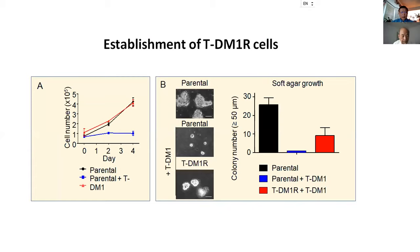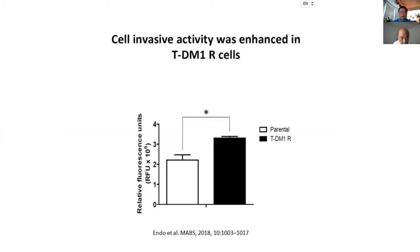We were wondering what was happening with other activities, for example cell invasion activity, because in so many resistant diseases you see metastatic tumors in patients. We investigated whether these resistant cells become more invasive. This data tells you that when cells become resistant to TDM1, invasion activity is increasing.